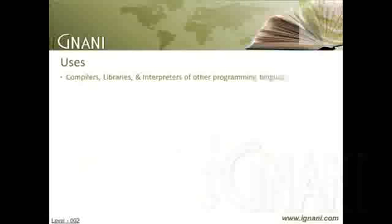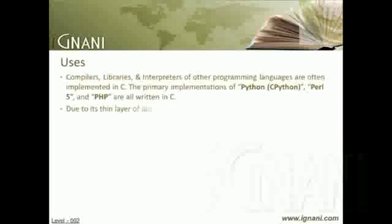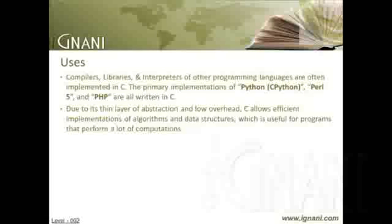One consequence of C's wide acceptance and efficiency is that compilers, libraries, and interpreters of other programming languages are often implemented in C. The primary implementations of Python, Perl 5, and PHP are all written in C. Due to its thin layer of abstraction and low overhead, C allows efficient implementations of algorithms and data structures, which is useful for programs that perform a lot of computations.